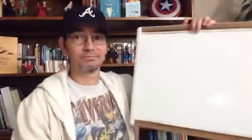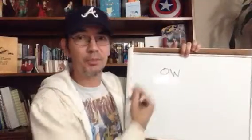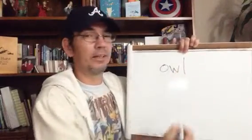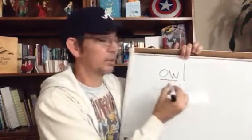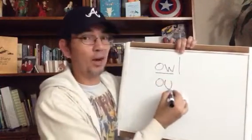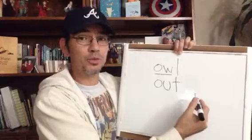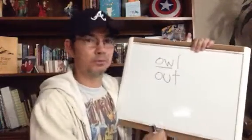I want you to still be looking for some 'oi' words — O-I and O-Y — but I'm going to add something new today, and that is 'ow.' Like if something hurt, you'd say 'ow.' It has that 'ow' in there — just like 'out.' That's from my favorite sport, baseball — you're out. There it is.